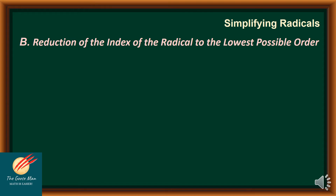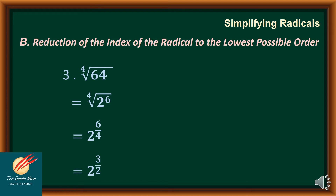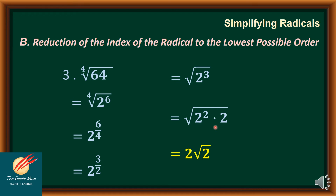Let's take the 4th root of 64. First, express 64 as 2 to the 6th power, then convert to exponential form: 2 raised to 6 over 4. Since 6/4 reduces to 3/2 by dividing both numerator and denominator by 2, we express this back in radical form as the square root of 2 cubed. Using the first technique, the square root of 2 cubed equals the square root of 2 squared times 2, so the result is 2 times the square root of 2.